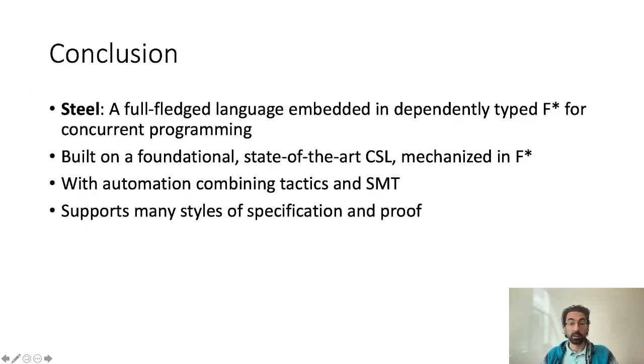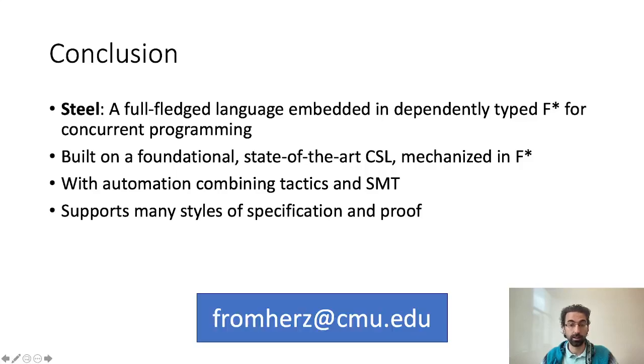In conclusion, we presented today STEEL, a full-fledged proof-oriented language for concurrent programming which is shallowly embedded in the dependently typed FSTAR and is based on a foundational CSL called SteelCore, which is entirely mechanized in FSTAR. Despite its expressiveness, STEEL provides useful automation facilities by relying on a mixture of tactic and SMT solving, while supporting many styles of specification and proof for concurrent programs, ranging from Viper-style permission accounting with implicit dynamic frames to IRIS-style dynamically allocated invariants, while also including partial commutative monoid based reasoning and dependent types. We are very excited to push this verification framework to its limits to reason in future about complex, low-level, high-assurance concurrent programs. Thank you for your attention.